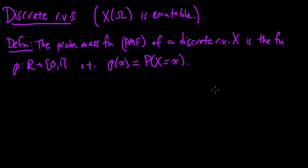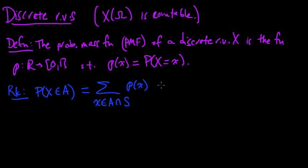That's just a simple definition. Let me make a remark about this definition. The probability that X lands in some set A is equal to the sum over all the numbers little x in A intersect S of the probability mass function at that point, where S is just this set of all the values that X can take, the image of X.